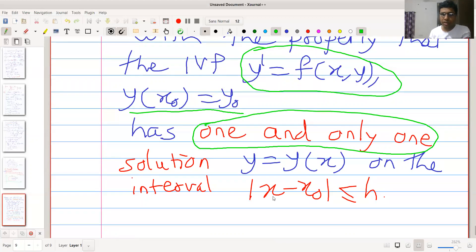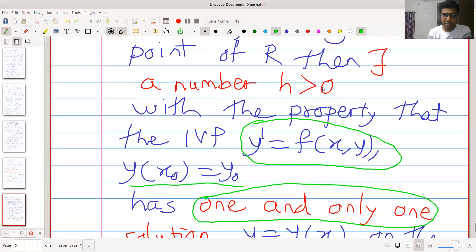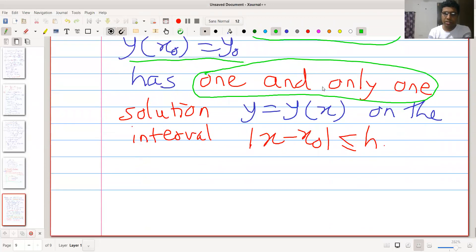Note that this solution exists locally. That means there exists a number h > 0 such that this solution exists in the interval |x - x₀| ≤ h. What this means: this interval is nothing but closed interval [x₀ - h, x₀ + h]. So it is guaranteed that there exists a unique solution locally.